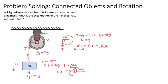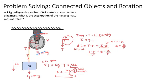To express alpha in terms of linear acceleration a, I use the relationship a equals r times alpha, so alpha equals a over r. Substituting, the torque equation becomes: tension times r equals the moment of inertia times (a over r). Dividing both sides by r gives tension equals I times a over r, all divided by r. Since the pulley is a disk, its moment of inertia is one half big M times r squared.